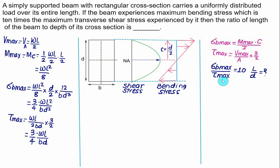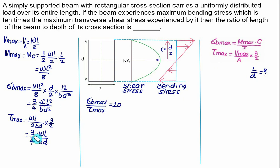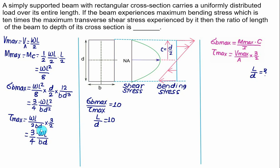Taking the ratio σ_B_max / τ_max = 10: the factors 3/4, W, B cancel, and L²/L gives L, while D²/D gives D. So L/D = 10. The required ratio L/D is equal to 10.